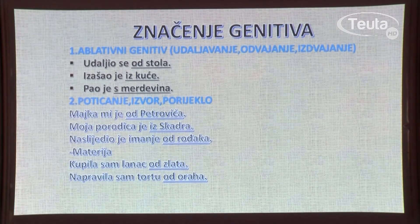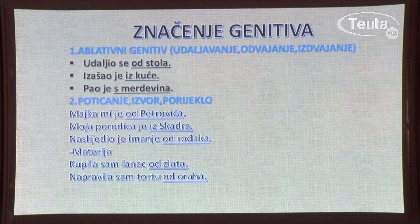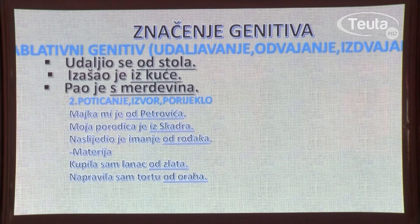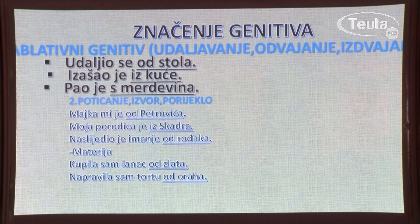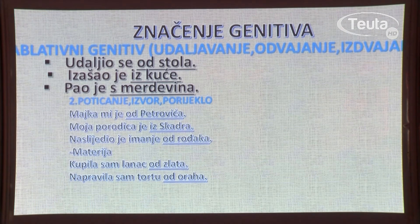Genitiv je padež koji u crnogorskom jeziku ima mnogo značenja. Najvažnija su: ablativni genitiv — ablacija znači odvajanje, pa je to značenje udaljavanje, odvajanje ili izdvajanje. Na primjer: udaljio se od stola — od čega? Od stola. Vraćamo se na pitanje za genitiv koga, čega. Izašao je iz kuće. Pao je s drveta.